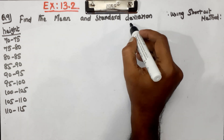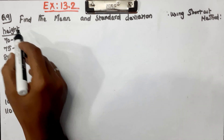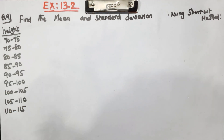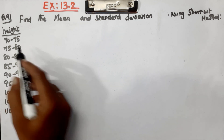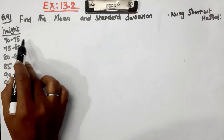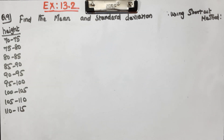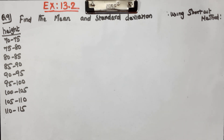First, you do have the height. Class intervals. The distribution can be in a continuous function.